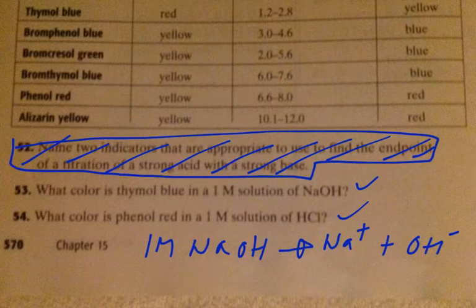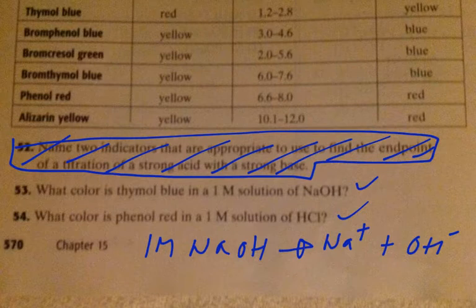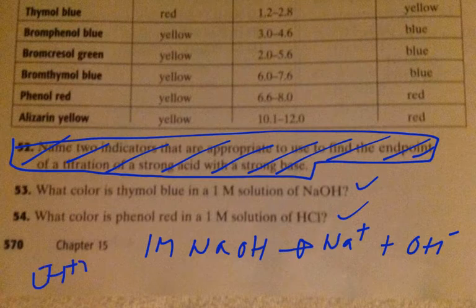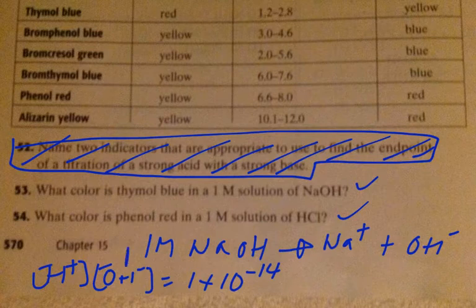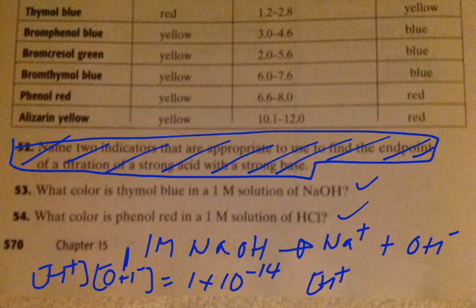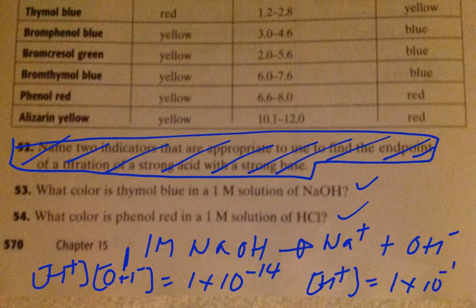Now we don't have to do all of this, but I'm just showing you something. If you have one big M NaOH, we know from experience that H+ times OH- is equal to 1×10^-14. If we have our OH- being one, that means our H+ is equal to 1×10^-14. And how do we find pH? pH is the negative log of H+.